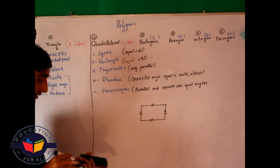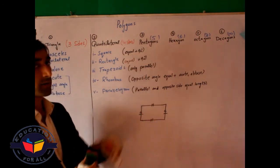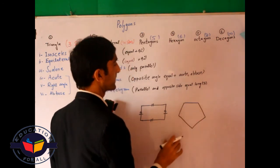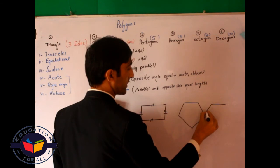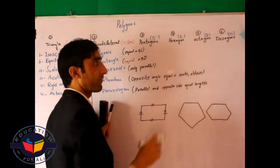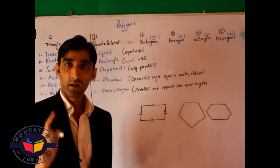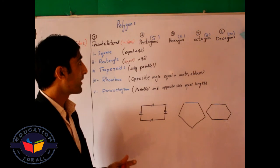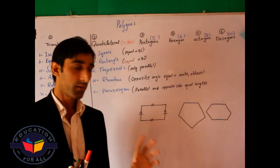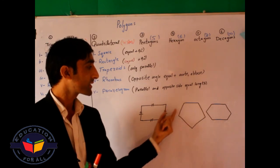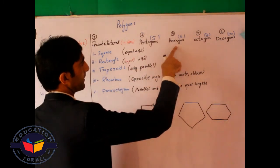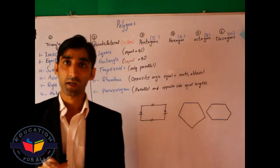The pentagon has five sides. A hexagon has six sides. An octagon has eight sides and a decagon has ten sides. If someone asks what is a regular pentagon, the answer is: a pentagon in which all sides are equal is called a regular pentagon. Similarly, if all six sides are equal, that is called a regular hexagon.